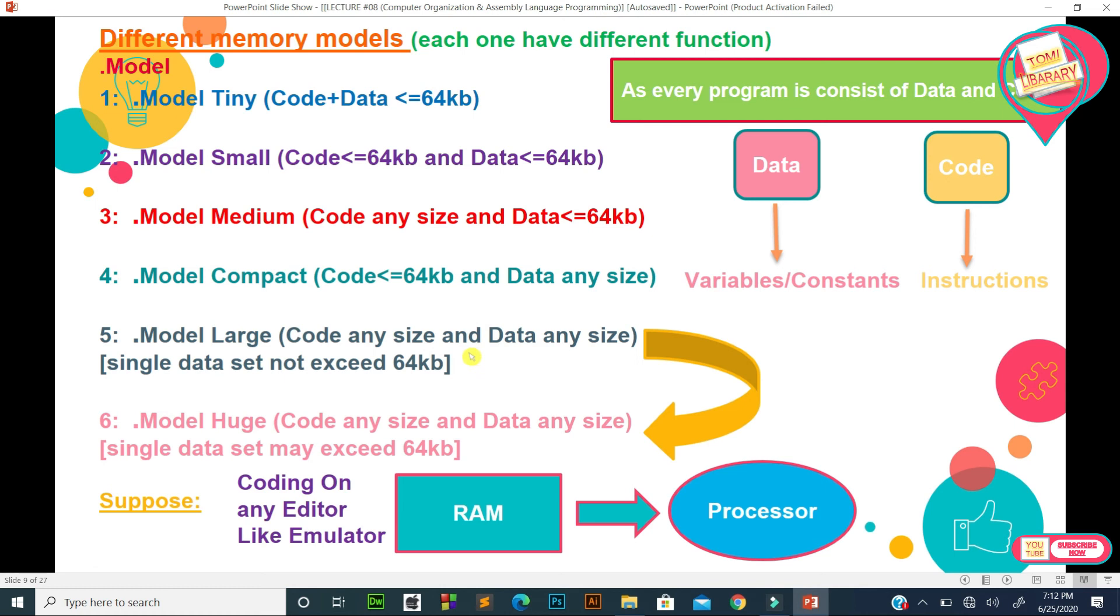Last one: When we write .MODEL Huge, the same situation occurs - code any size and data also any size. But Huge is larger than Large. The small difference, the limitation is that in .MODEL Large, single data set cannot exceed 64 kilobyte, but in .MODEL Huge, single data set may exceed 64 kilobyte. So it can exceed 64 kilobyte for single data.